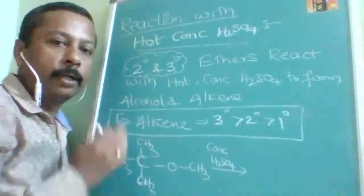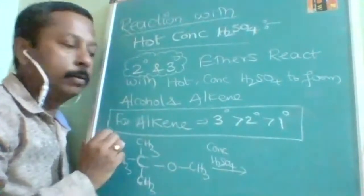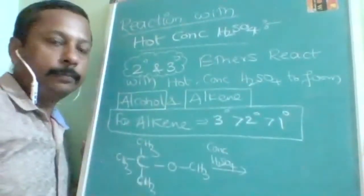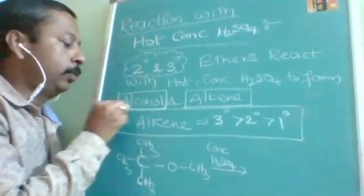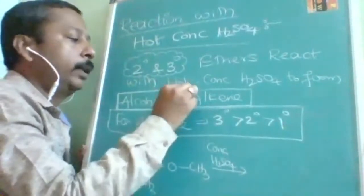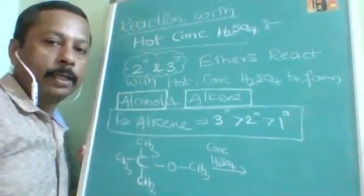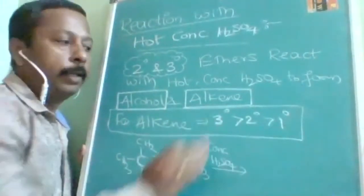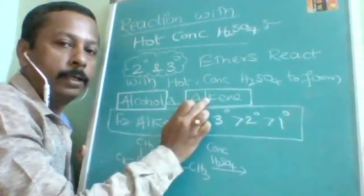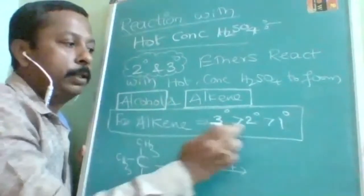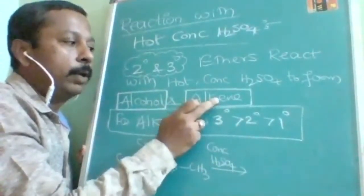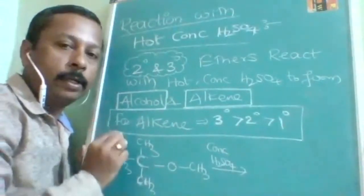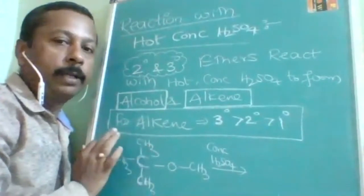It will split the given ether into two parts — a mixture of products. One product will be alcohol and another will be alkene. It is not necessary that both groups are 2° or both are 3°. The rule is: the higher degree alkyl group undergoes elimination to give alkene, and the lower degree alkyl group undergoes substitution to give alcohol.